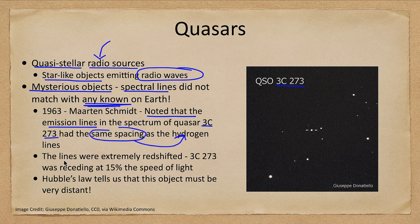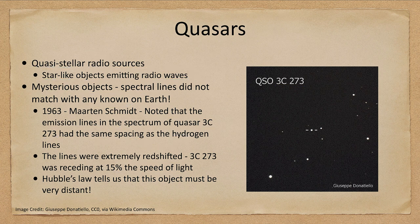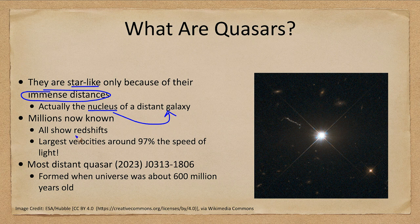What that meant is that we were seeing hydrogen that is extremely redshifted, and this quasar was receding from us at 15 percent the speed of light. Hubble's law relates distance and velocity — if it is receding at that high a speed, it must truly be extremely distant. So what are these quasars? They only appear star-like because of their immense distance. What they really are is the nucleus of a distant galaxy — we just cannot see the rest of the galaxy because it is so far away.